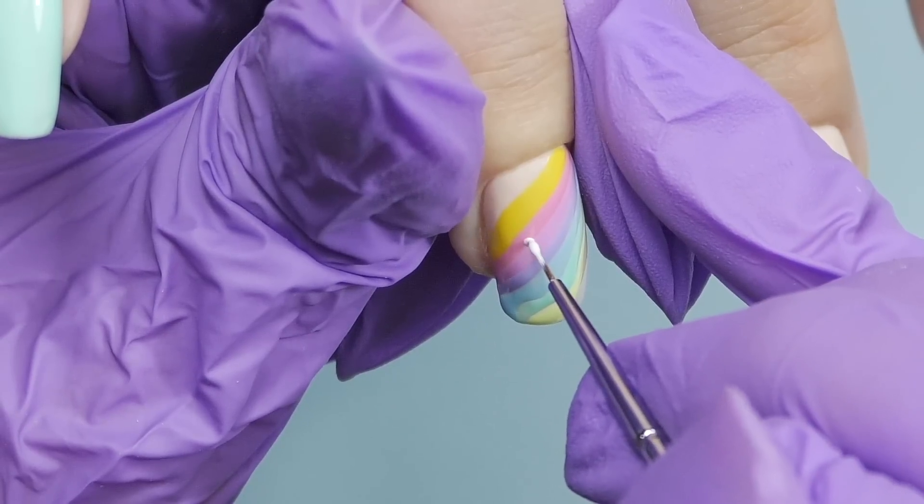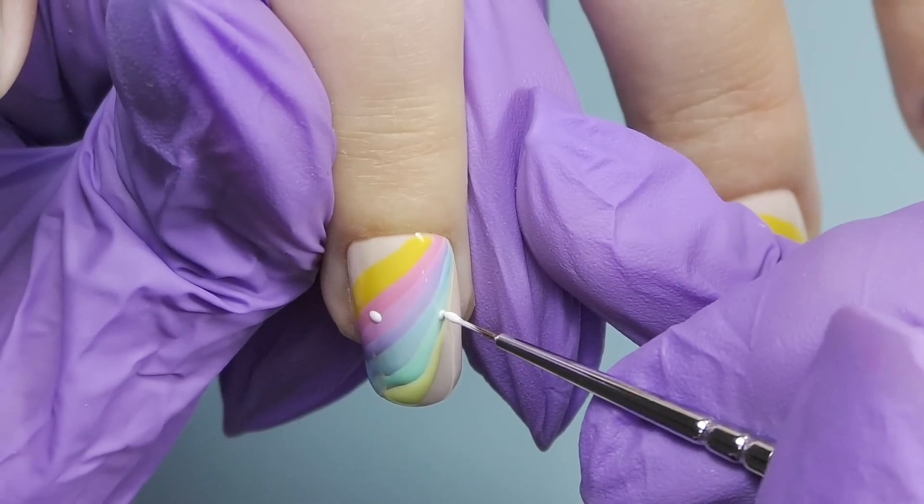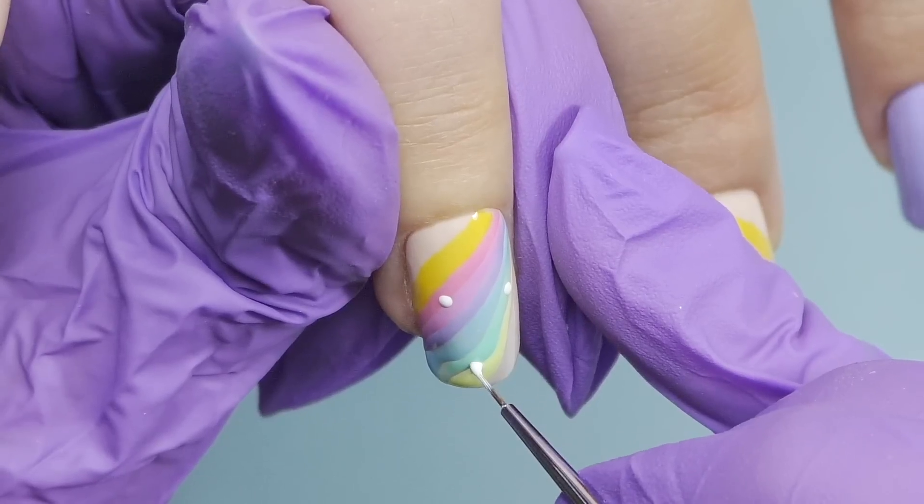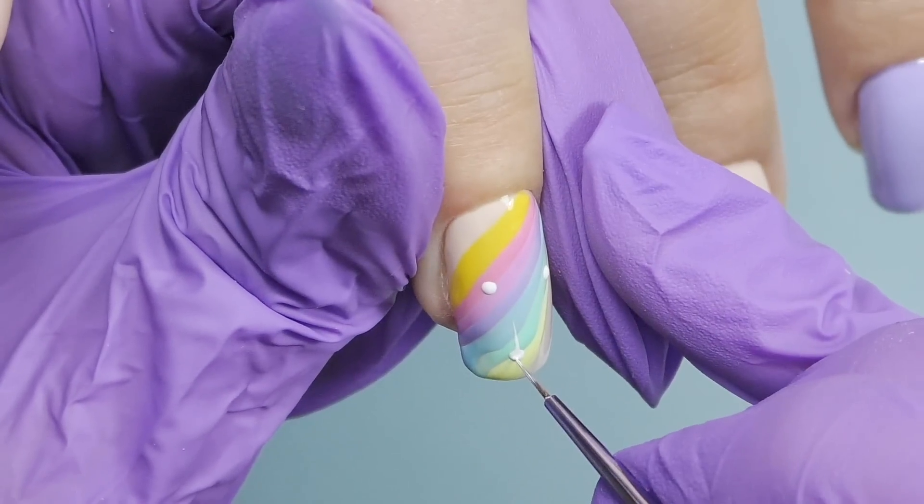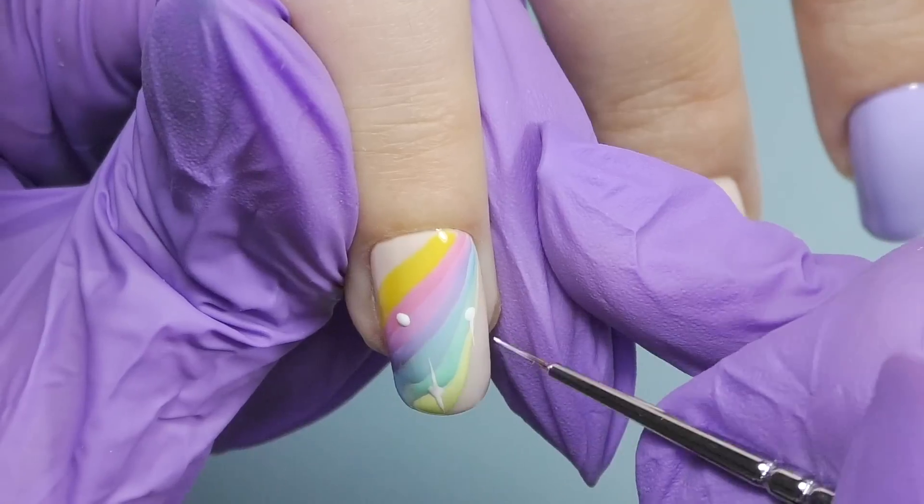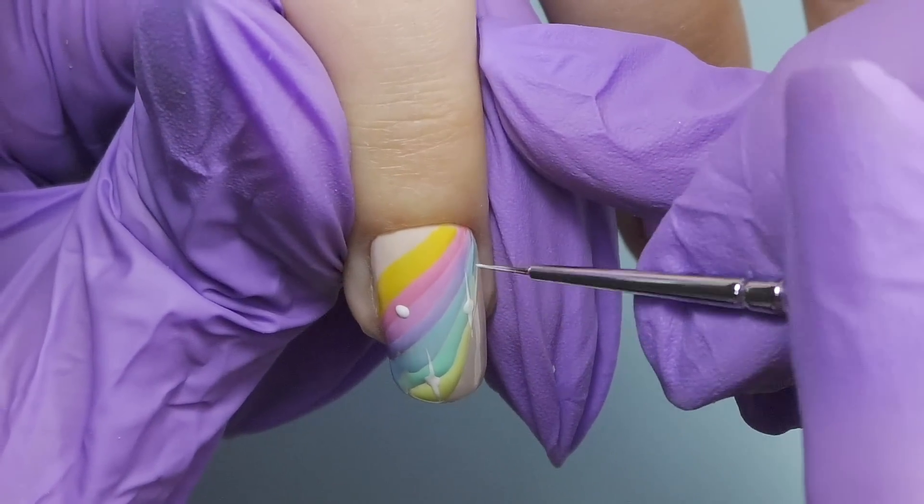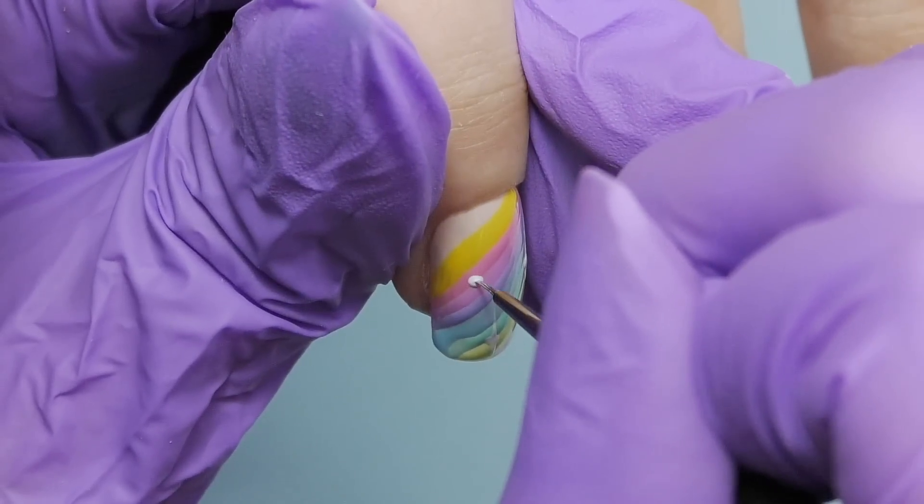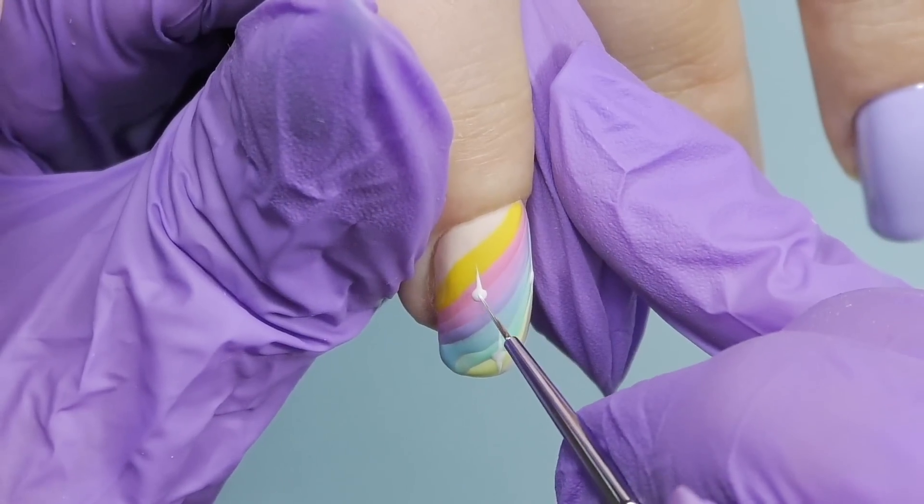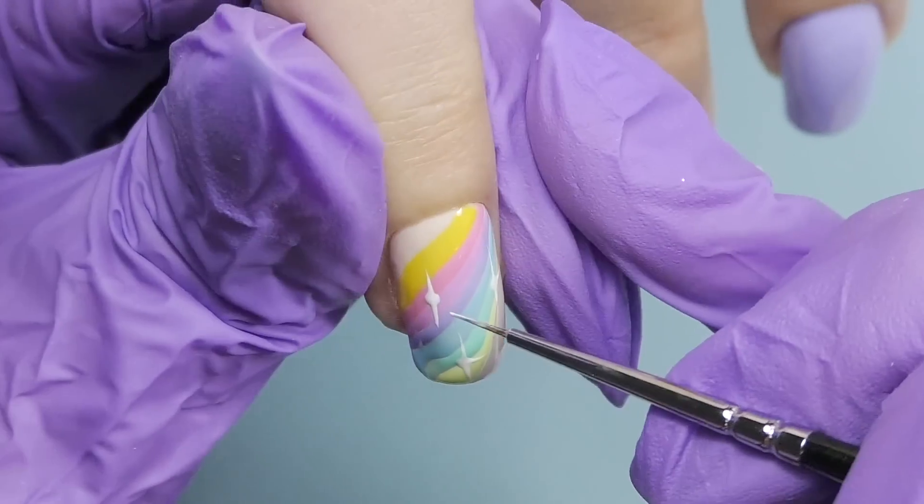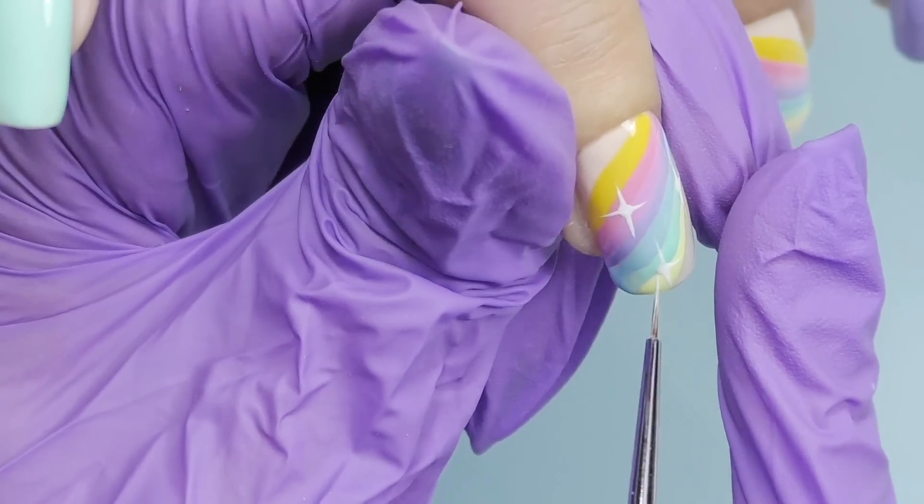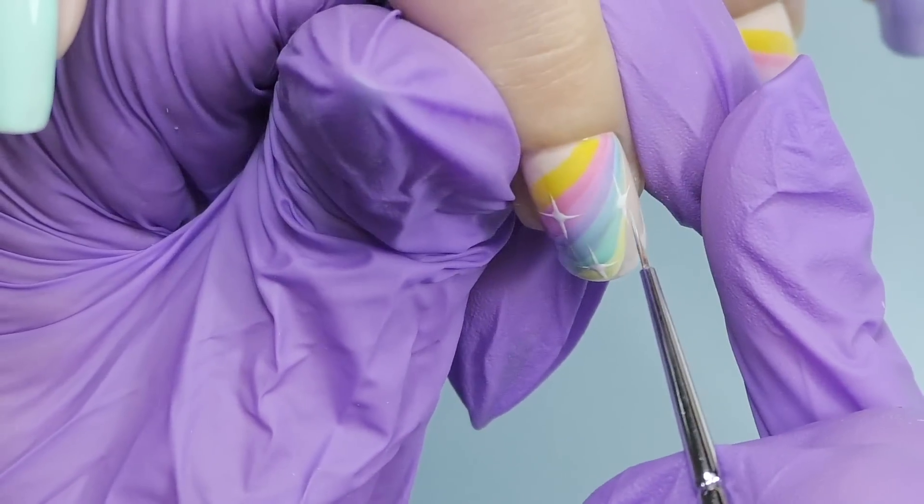This is white color that is also included in this kit. So, let's add some stars. First, you need to add large size dots and then without taking additional product with a dry brush, create a line that goes up and another one will go down. It's important you always need to create the line from the center to the side, then create the lines that go to the right and to the left.